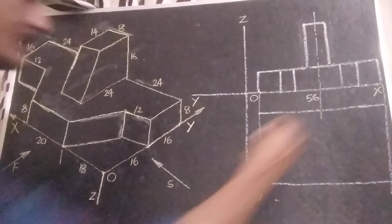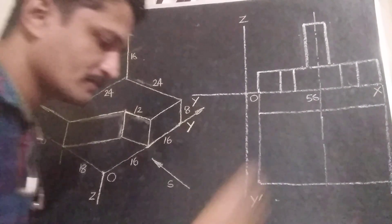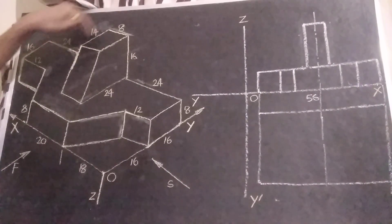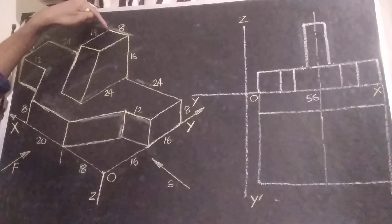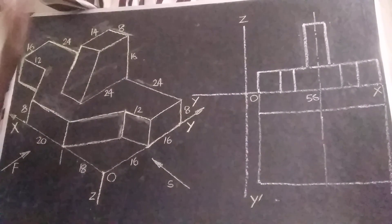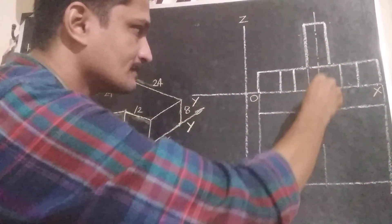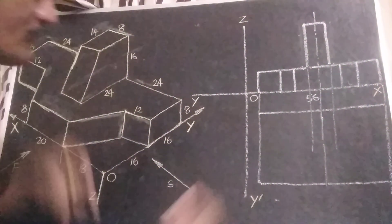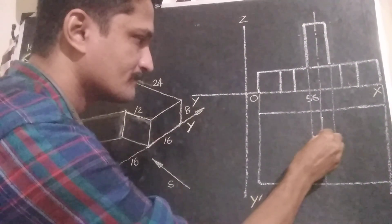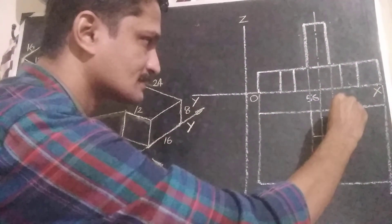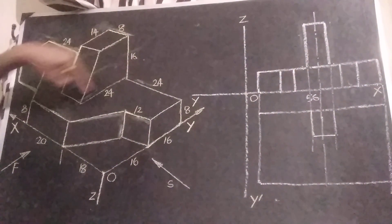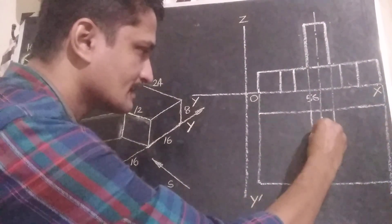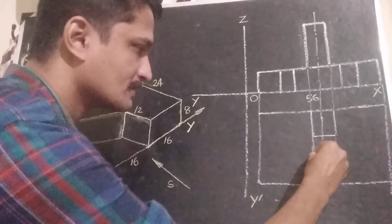In top view, we must see this part and this part — there must be a rectangle here with width equal to 8 mm and length 14 mm. Next, another rectangle is visible in top view with length equal to 24 mm.